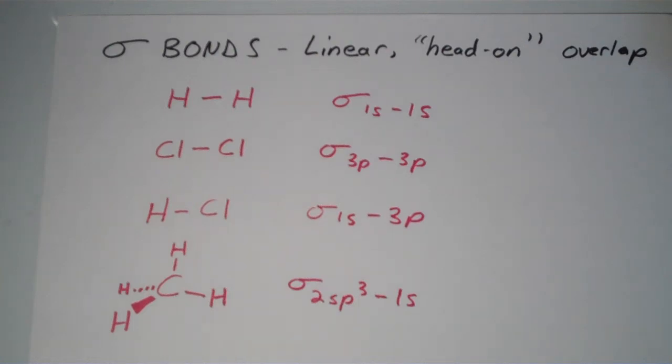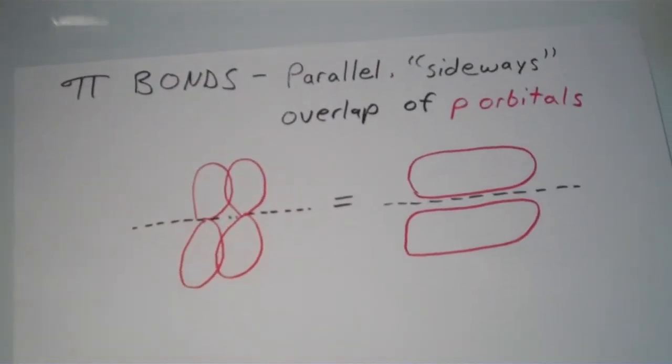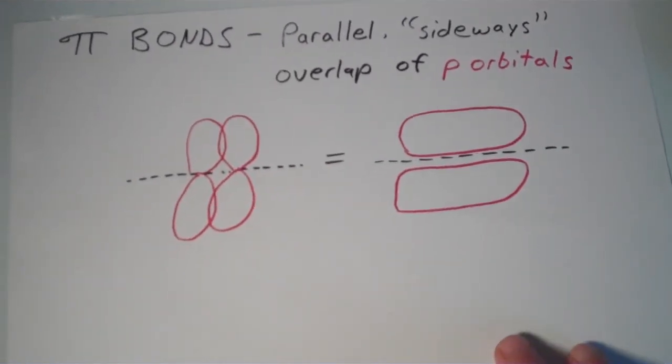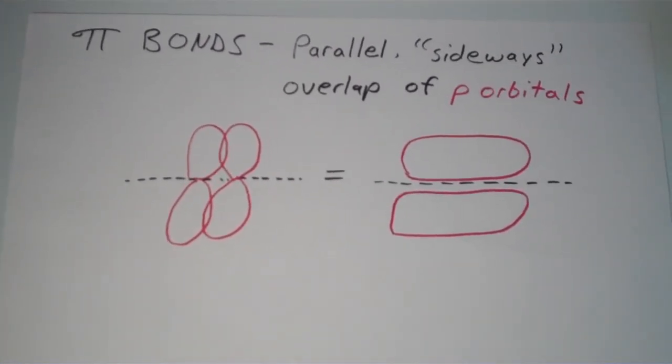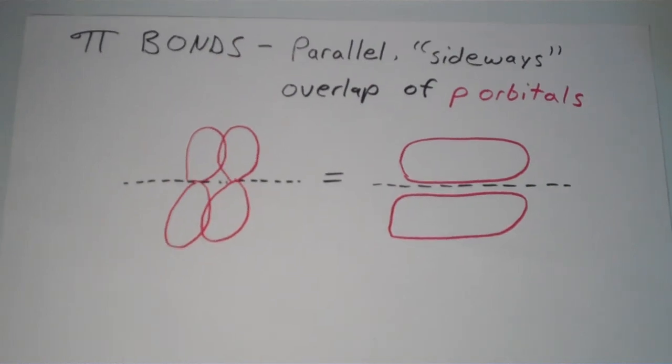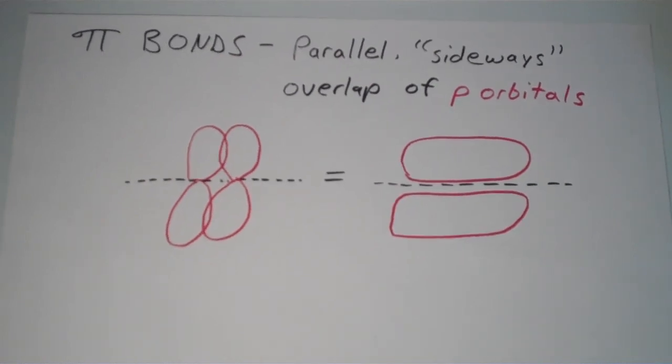The second type of bond is what we call a pi bond, which is a parallel or sideways overlap of p orbitals. And this turns out to have a very important impact on the chemical properties of compounds that are doubly bonded. So any double covalent bond that you see consists of a sigma bond and a pi bond.